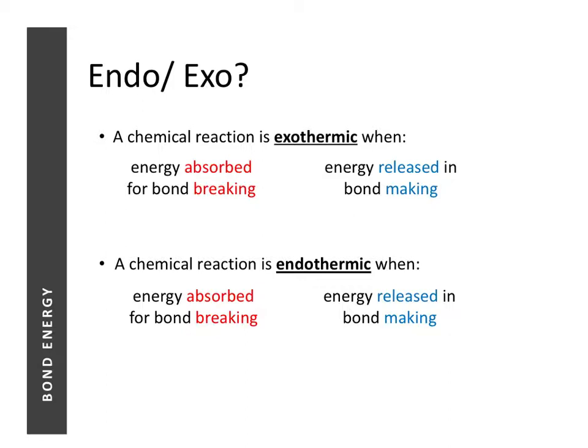For chemical reactions involving both bond breaking and bond forming, there is no way to tell by simply looking at the reaction whether it is endothermic or exothermic. But if we know the total energy taken in for bond breaking versus the total energy given out during bond forming, we can determine this. A reaction is exothermic when energy absorbed for bond breaking is less than energy released in bond forming, and endothermic when energy taken in for bond breaking is more than energy given out for forming bonds.